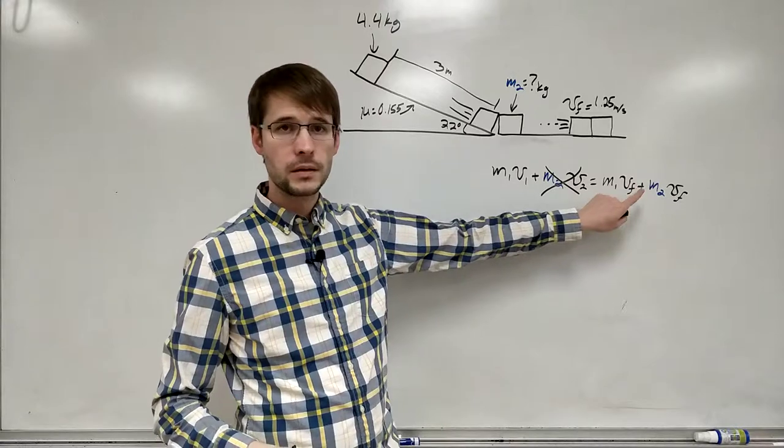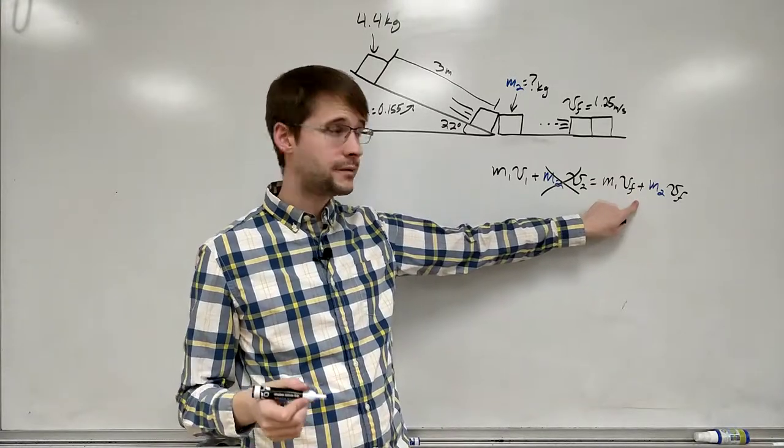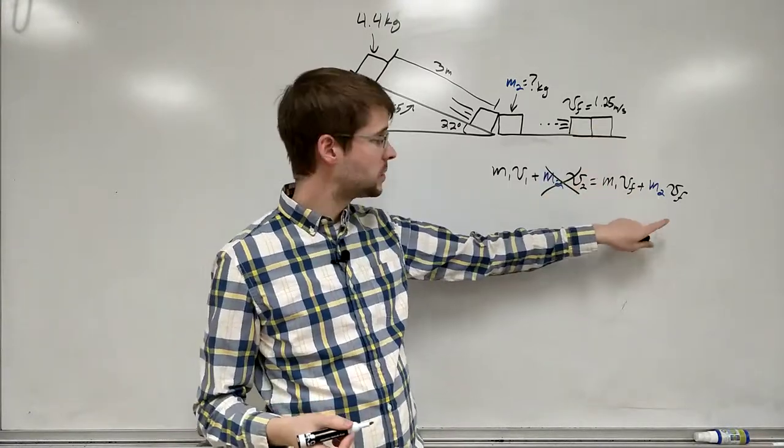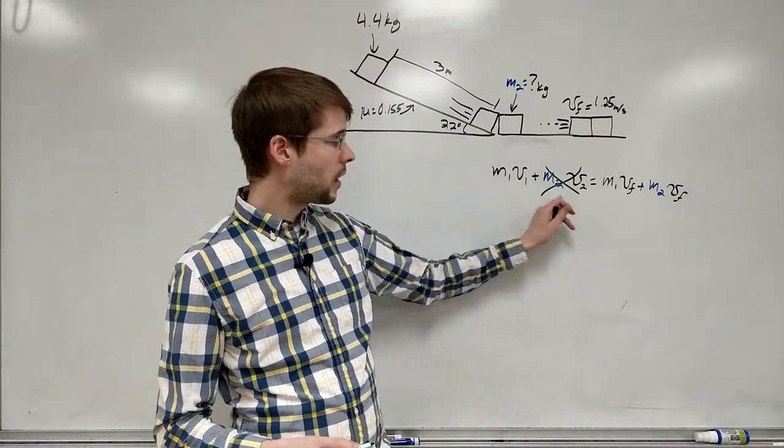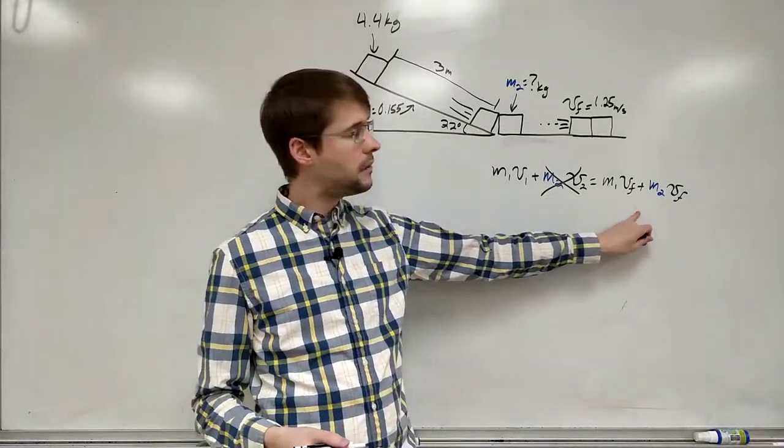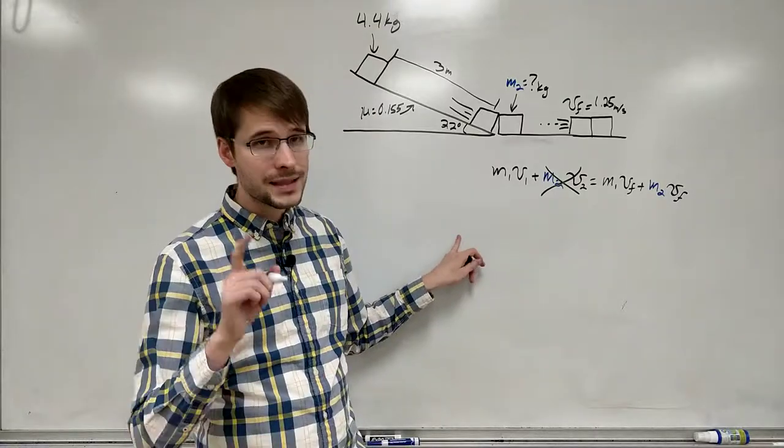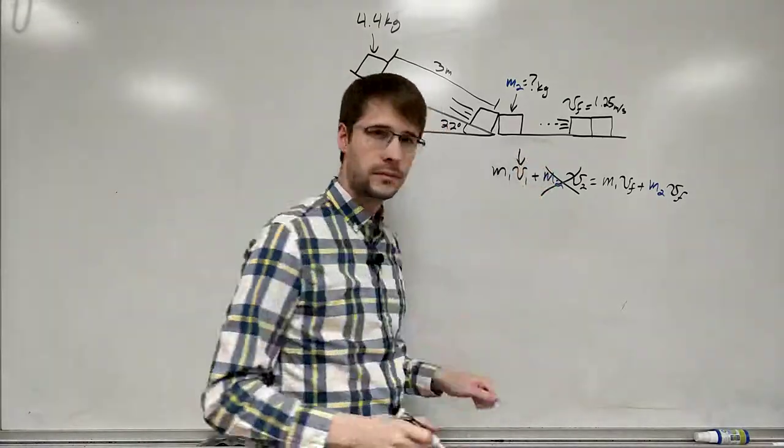We know m1, we know vf, that's 1.25 meters per second. We don't know m2 and we're looking for that. So our unknown is right here. And everything else in this equation we know except for that guy.